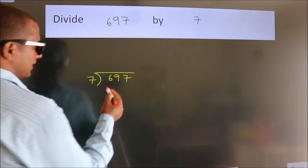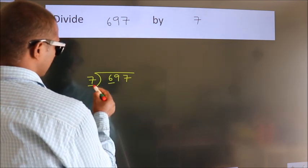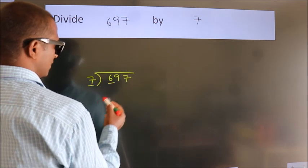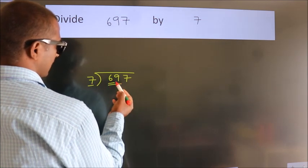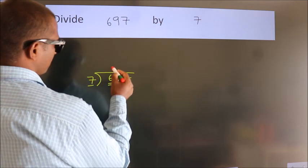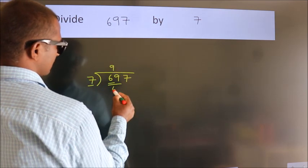Next, here we have 6, here 7. 6 is smaller than 7, so we should take two numbers: 69. A number close to 69 in the 7 table is 7 nines, 63.